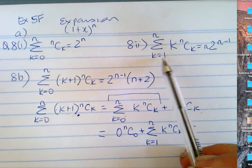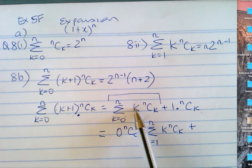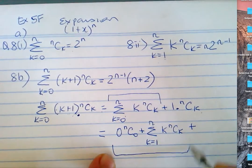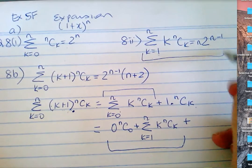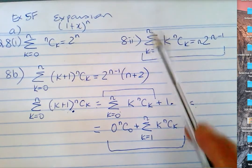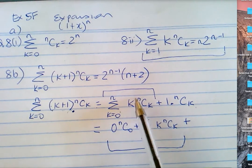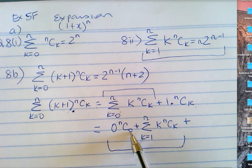This one only goes from k is one to n, but this one is from k is zero. But when you substitute k is zero, you get zero anyway — so I'm just breaking this first term up. Zero times nC0 is zero times one. The first term is zero.